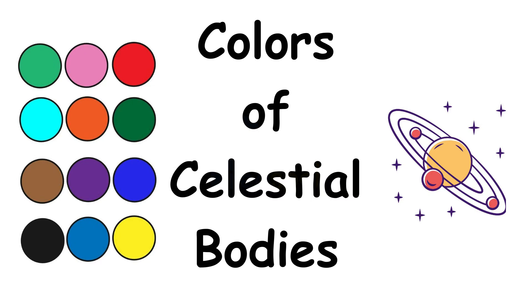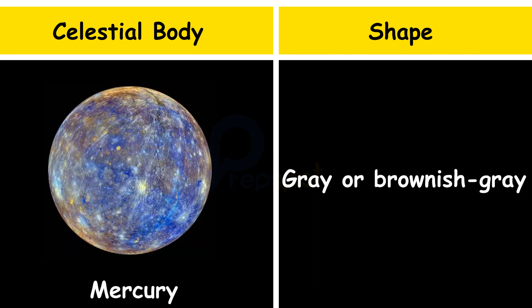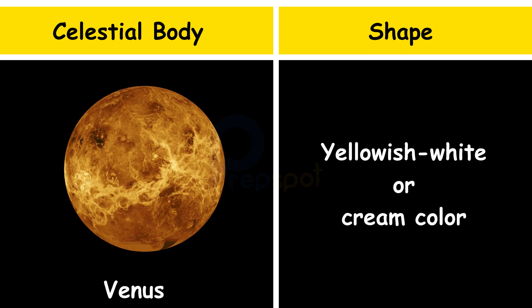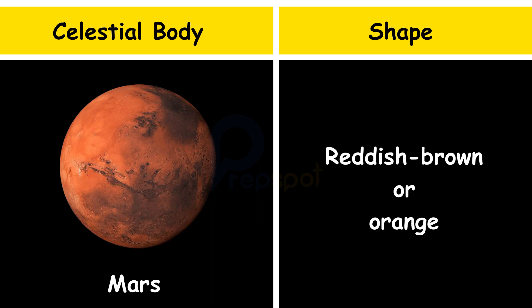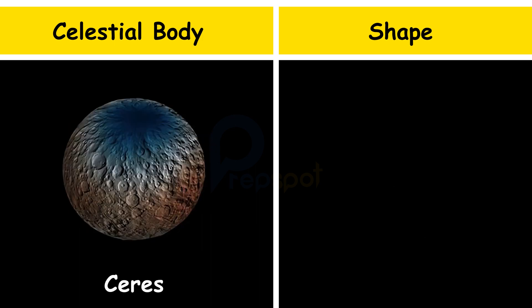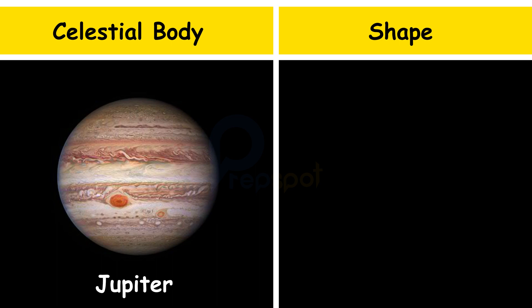Colors of the celestial bodies in the solar system: Sun — white; Mercury — gray or brownish gray; Venus — yellowish white or cream color; Earth — blue; Mars — reddish brown or orange; Ceres — grayish white or light brown; Jupiter — banded.